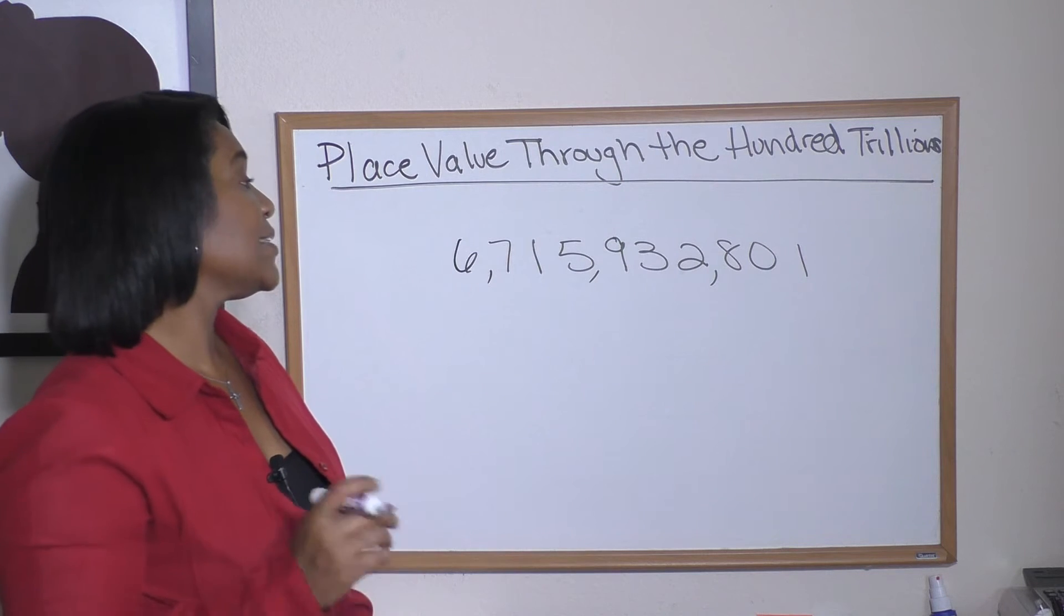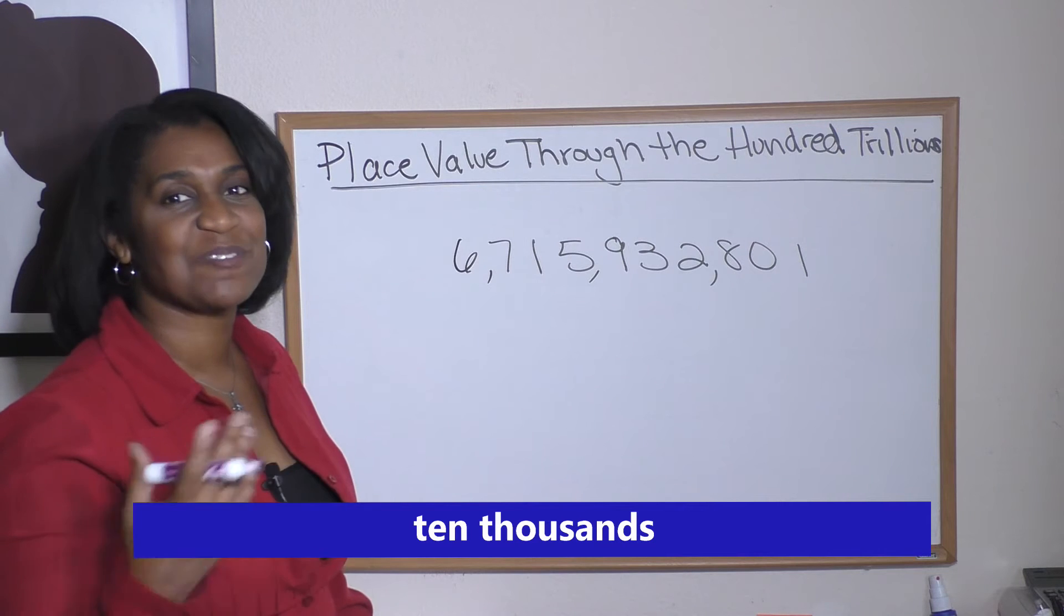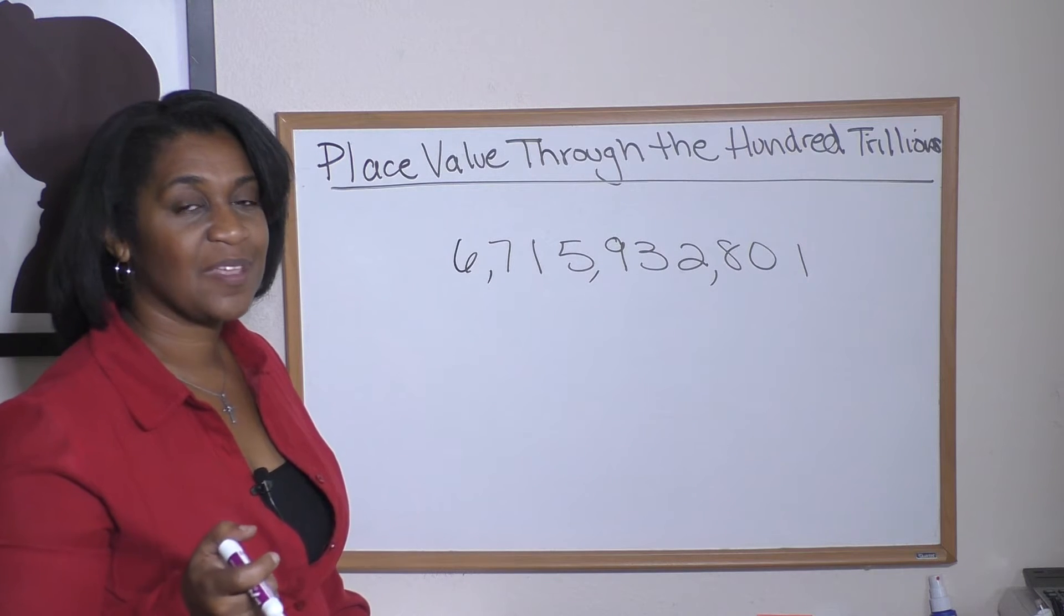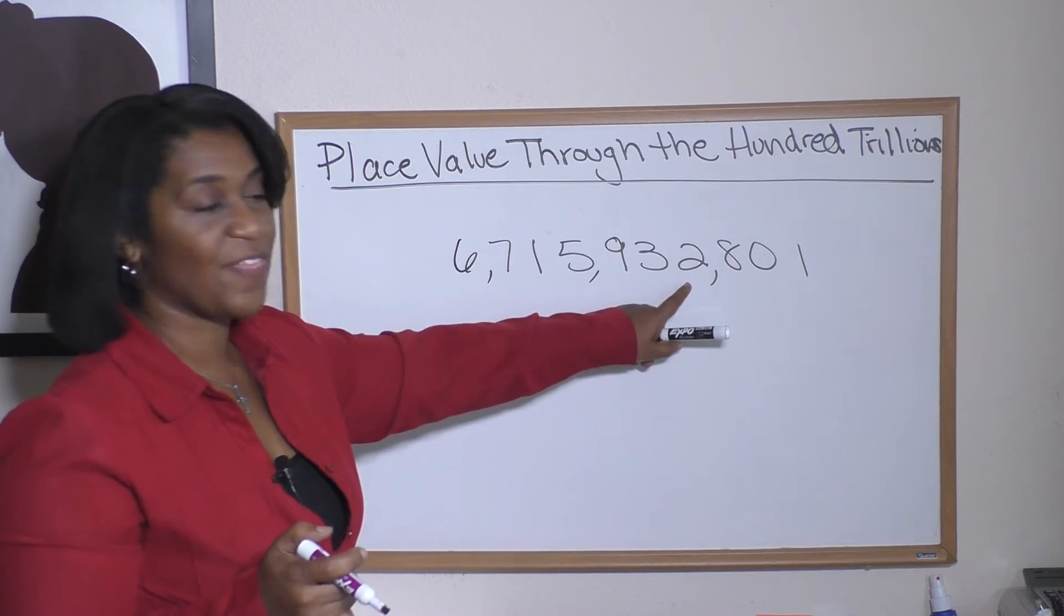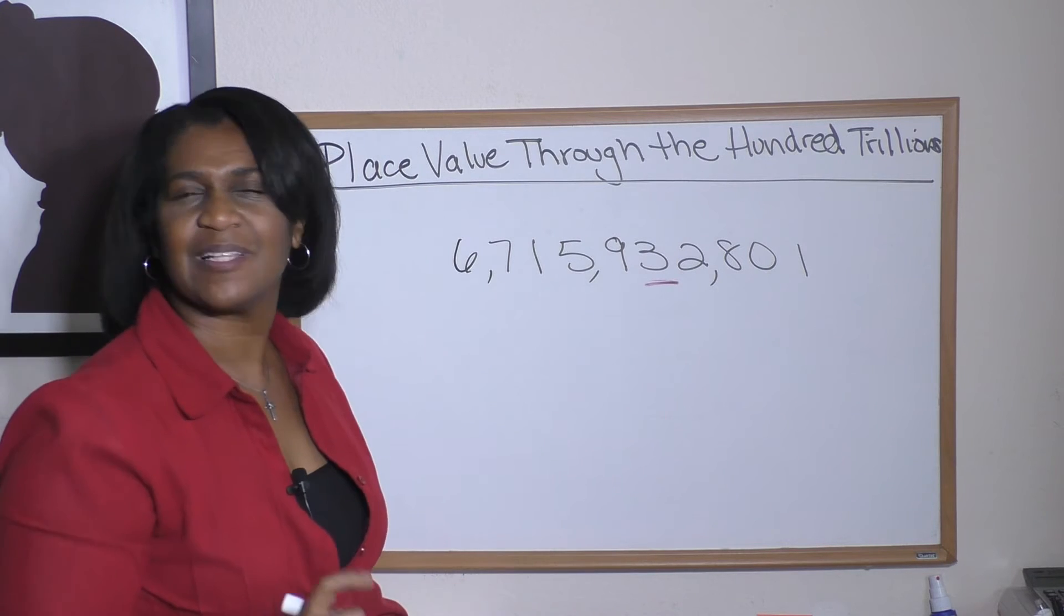If I asked you what number is in the ten thousand category, ten thousand place value, we would take a look. What would you say? Ten thousand. First we go to the thousand, that's the two. And then, yep, three is our ten thousand.